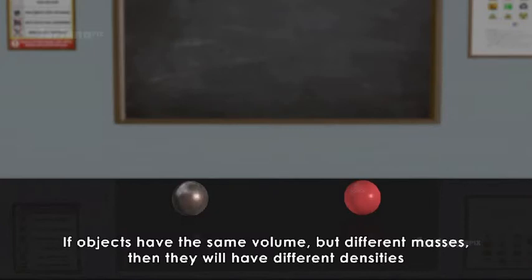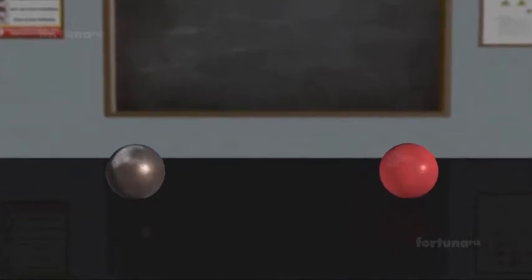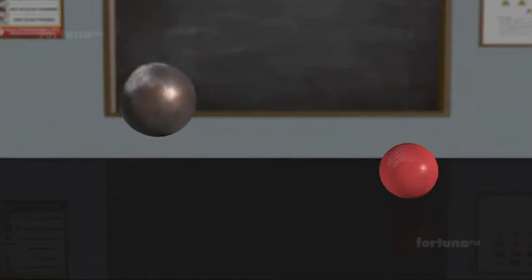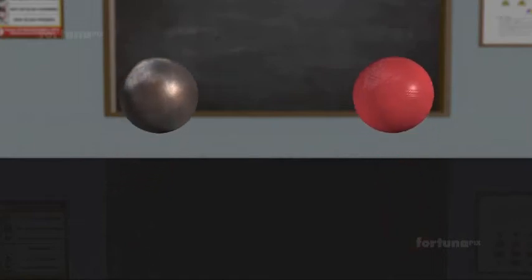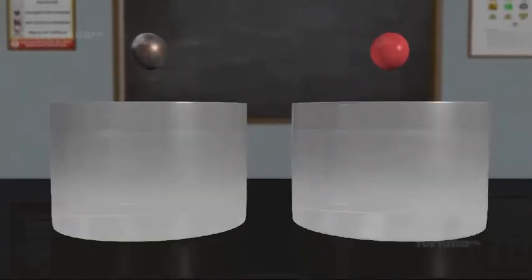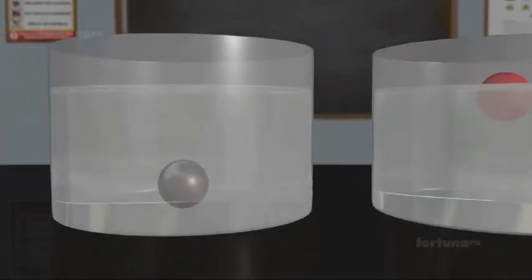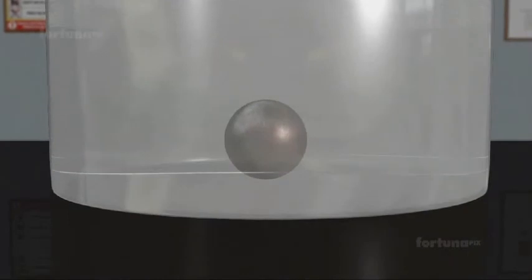If objects have the same volume but different masses, then they will have different densities. Let's look at this idea a little more closely. If we made two baseballs of identical sizes, one of iron and one of rubber, they will have the exact same volume. The molecules are more tightly packed in the iron ball than in the rubber ball, so they will have different masses.